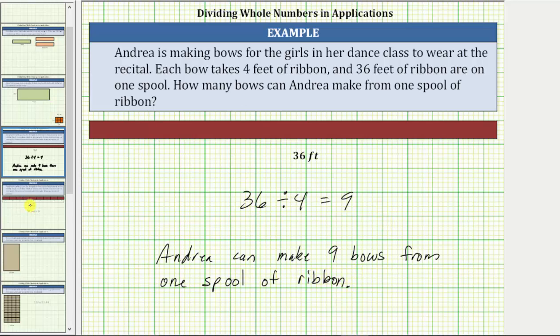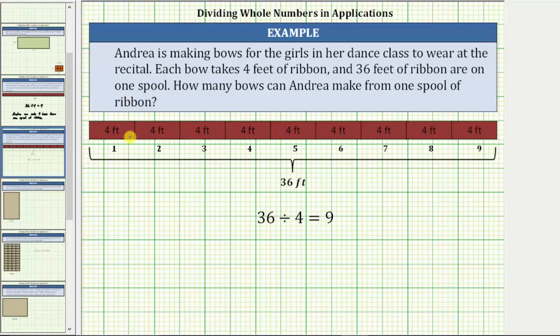To model the quotient, if we were to cut or partition the length of 36 feet into four foot sections, we can see from the model there are nine copies or nine lengths of four feet in 36 feet, verifying the quotient is nine.